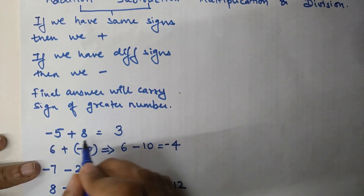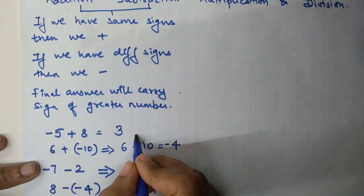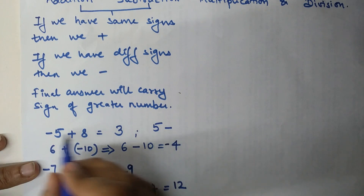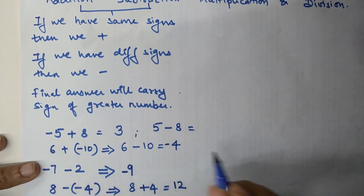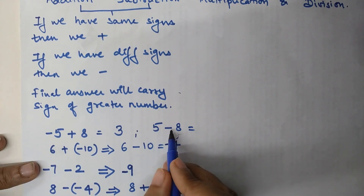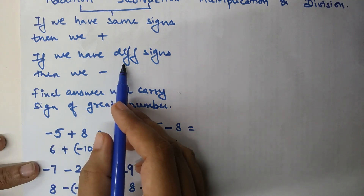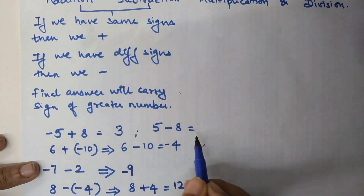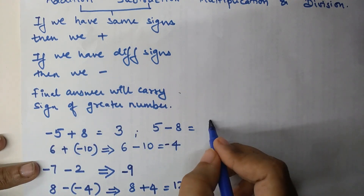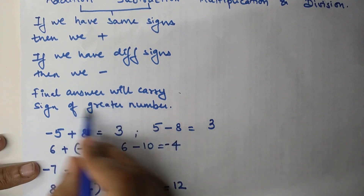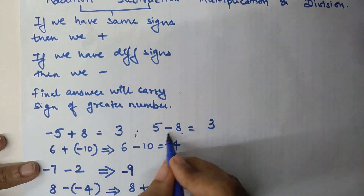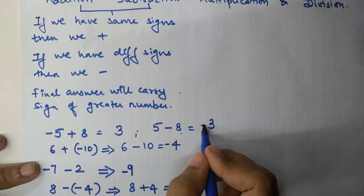Now let's reverse the signs: 5 minus 8. Here 5 is positive and 8 is negative, so we have two different signs. The overall operation is subtraction. 8 minus 5 gives 3, but the final answer carries the sign of the greater number, which is 8, and its sign is negative. So the final answer is negative 3.